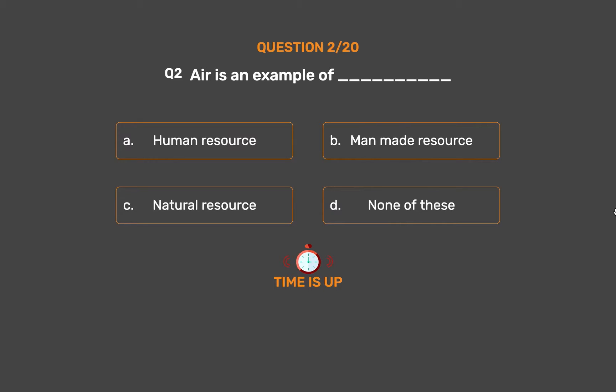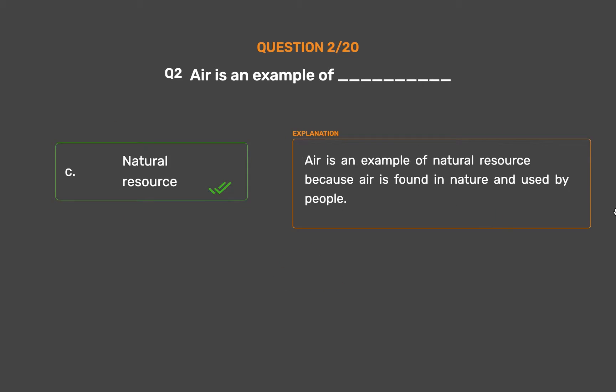The correct answer is Option C: Natural resource. Air is an example of natural resource because air is found in nature and used by people.